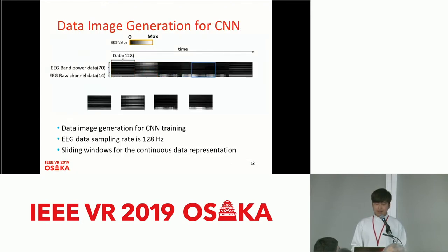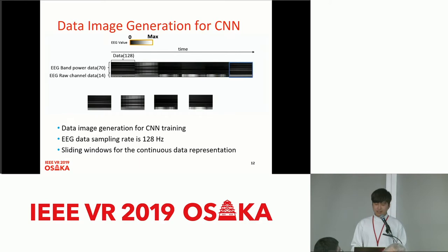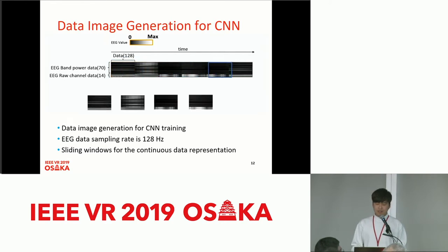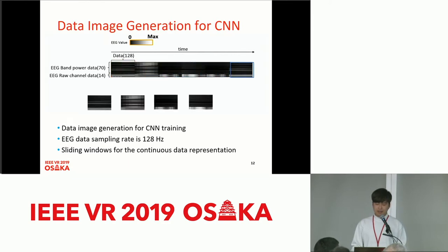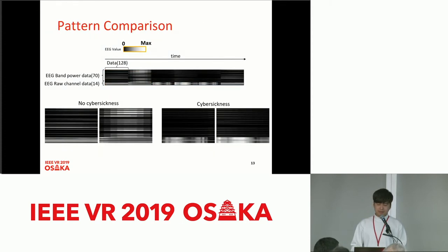For CNN learning, we convert signal data into an image format. The height represents 84 EEG channels at 84 pixels, and the width is 128 pixels on the time axis. The purpose of using the CNN algorithm is to discover EEG data patterns causing cyber sickness over time. We use the sliding window method at every 64 pixels. We compare two different signals — without cyber sickness and with cyber sickness — and similar image patterns are found for each cyber sickness flag.